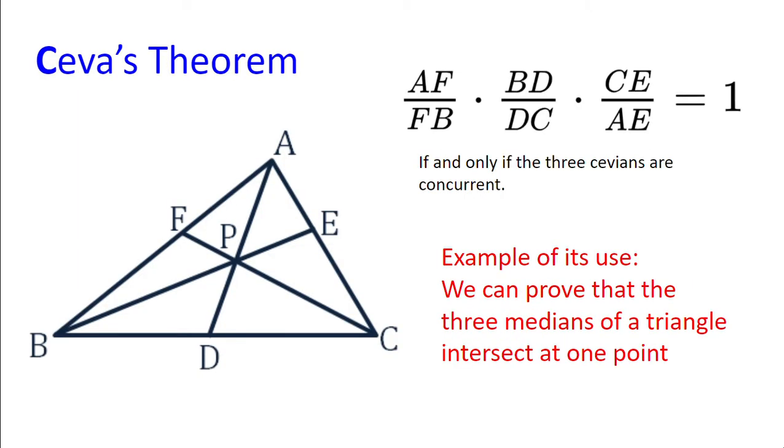Next we have Ceva's theorem. This is when AD, BE, FC all intersect at point P, then AF divided by FB multiplied by BD divided by DC multiplied by CE divided by AE equals 1.